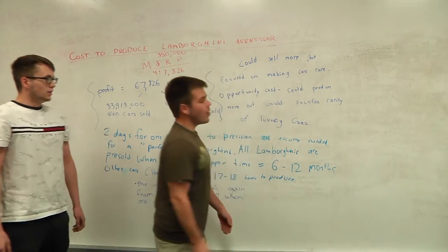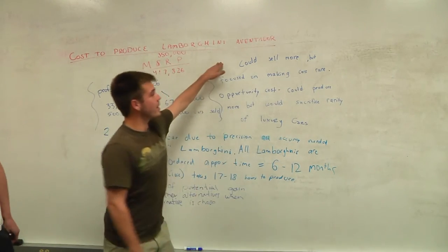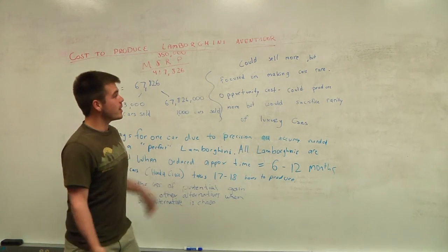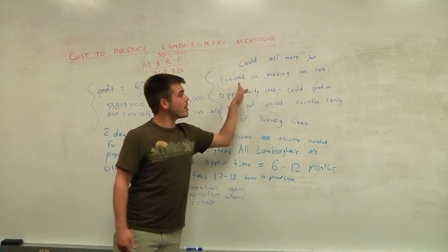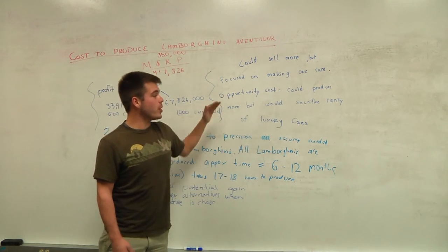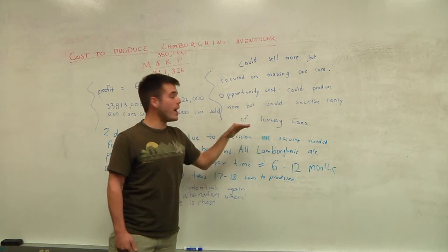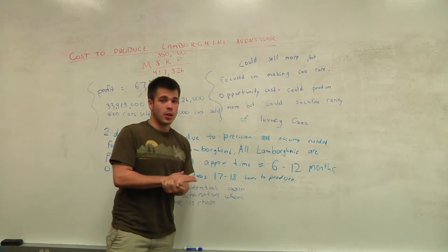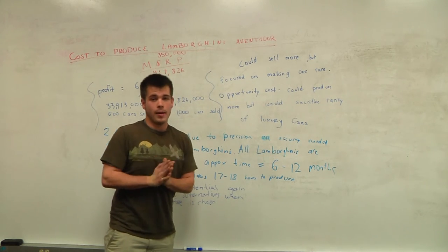So we're going to talk about the opportunity cost of producing Lamborghinis. So we could sell more Lamborghinis, but since we are focused on making our cars rare, then our opportunity cost would be we could produce more, but we would also sacrifice the rarity of luxury cars, which if we produced a lot more, we might have to lower the price in order to get people to buy it.